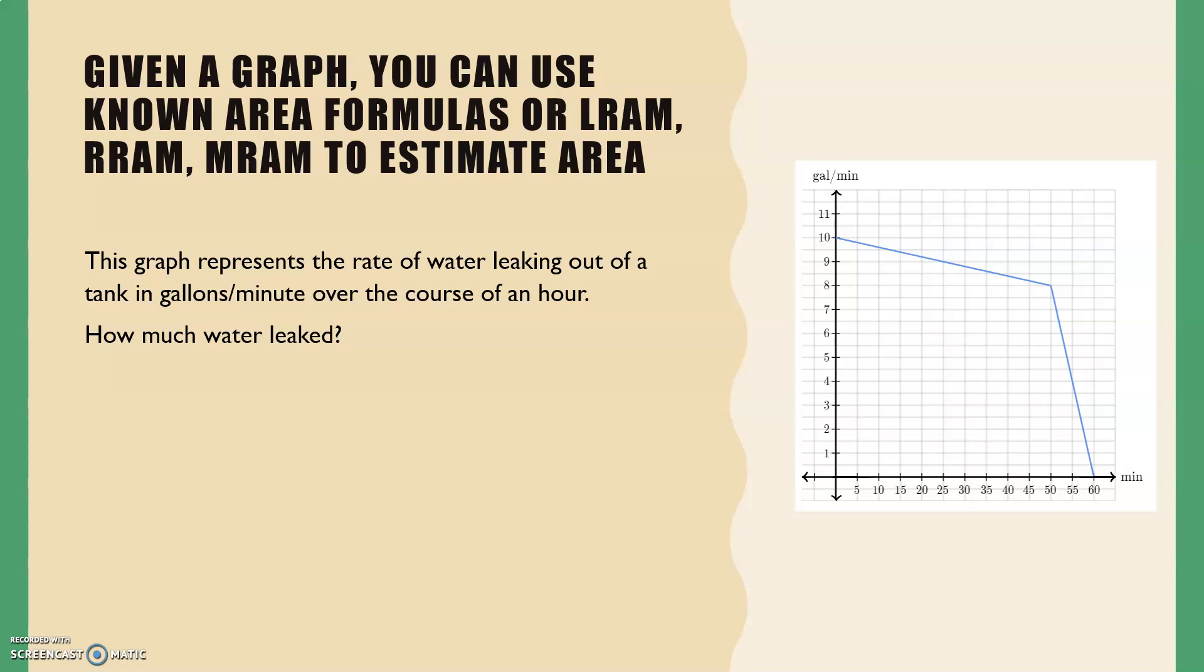We can see that the vertical axis is in gallons per minute and the horizontal axis is in minutes. So if we multiply gallons per minute times minutes, our minutes cancel and we wind up with the number of gallons. And that's why we're going with area here. We're looking at the area under the curve as a total amount of gallons. And this works because we have a rate function that is graphed.